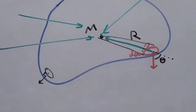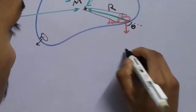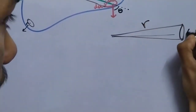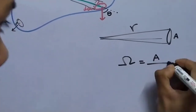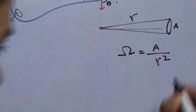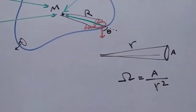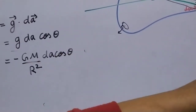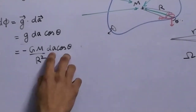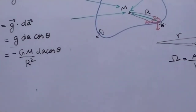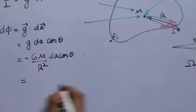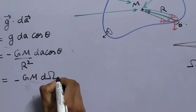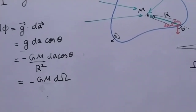Now, dA·cosθ is the component of the surface perpendicular to the field vector. As discussed in our previous video on solid angles, the solid angle dΩ is defined as A/R². So dA·cosθ/R² equals the small solid angle dΩ. We can therefore write dφ as −GM·dΩ.